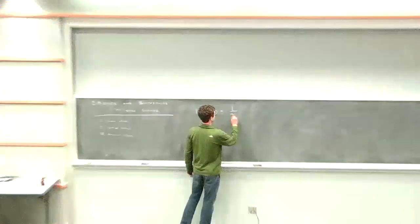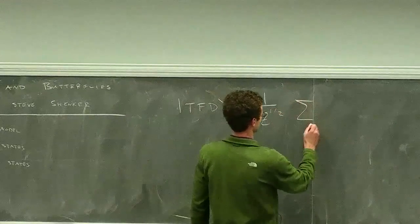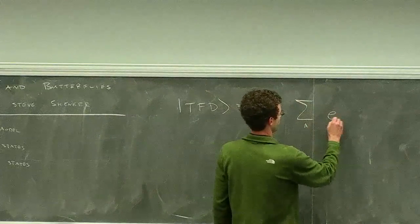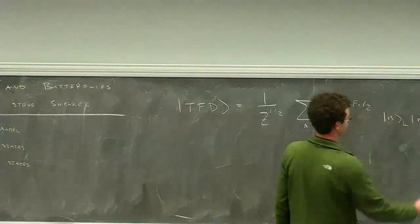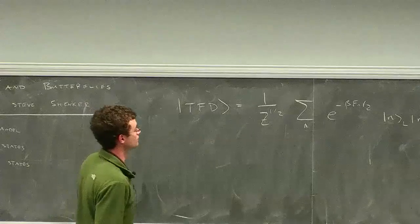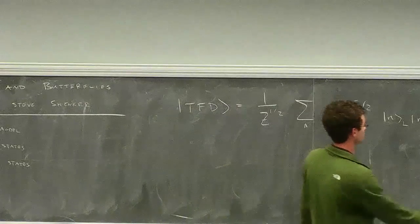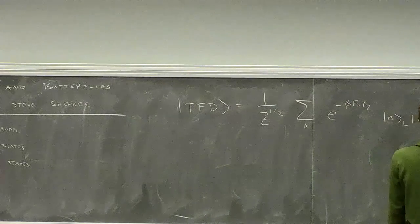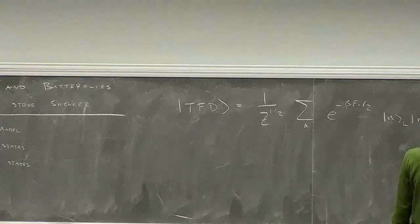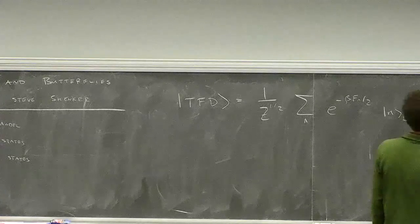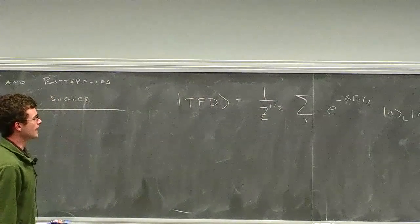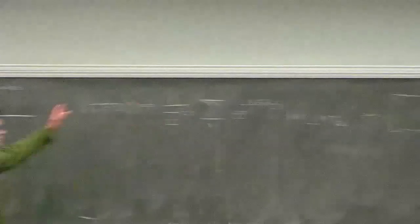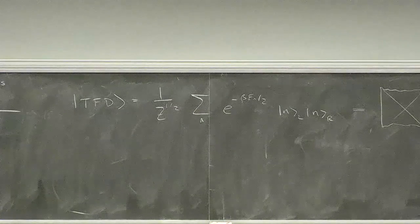The thermofield double is an entangled state in the Hilbert space of two CFTs, which I'll call L and R. It's by now well understood how we can go from that state to the bulk geometry of the eternal ADS Schwarzschild black hole. Mark and Lenny discussed some properties of this state, and I'm not going to elaborate on that.